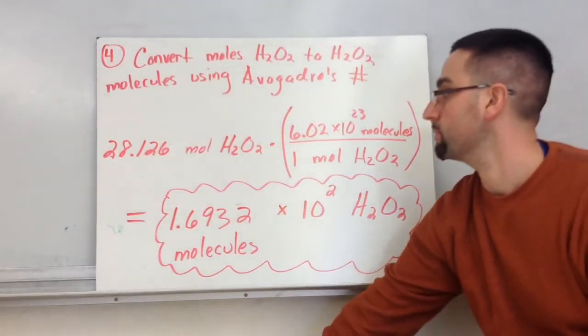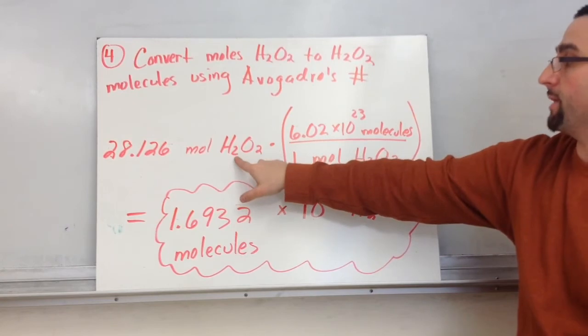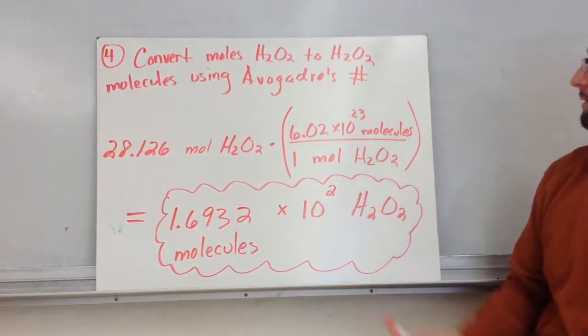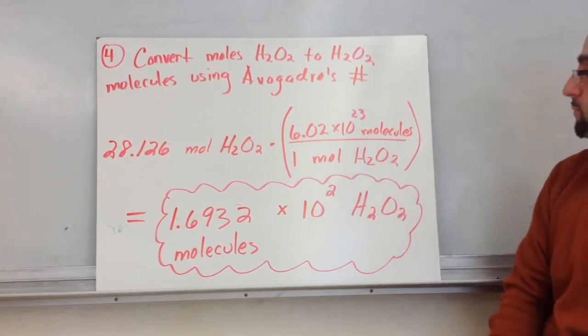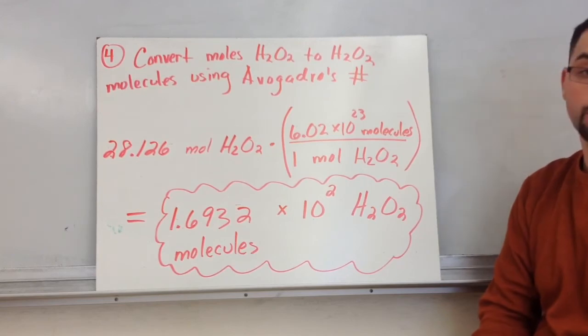And finally, we can make the jump between moles of a compound and molecules by using Avogadro's number. One mole of a substance has Avogadro's number of particles. So this is the number that we're looking at.